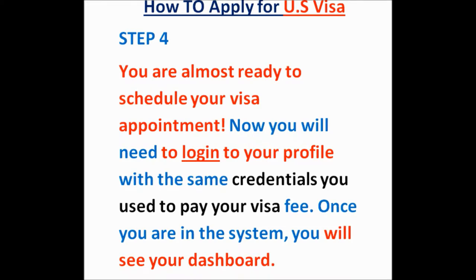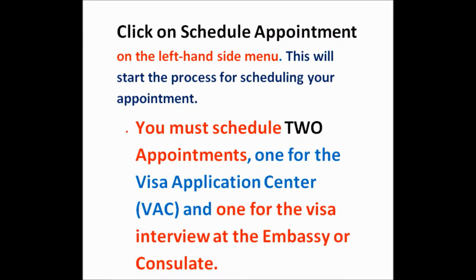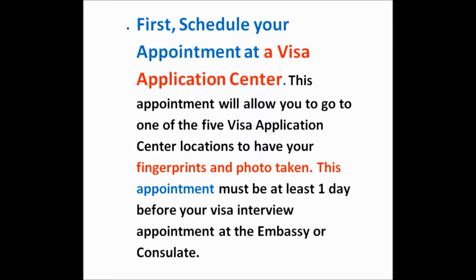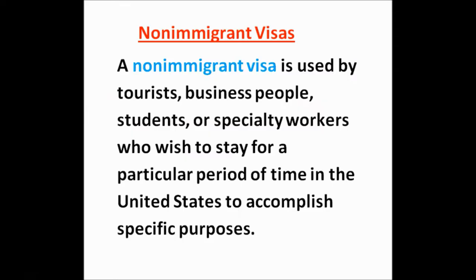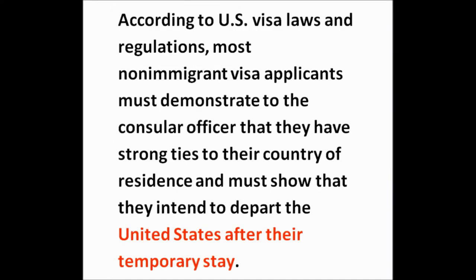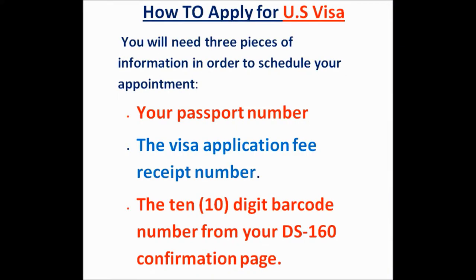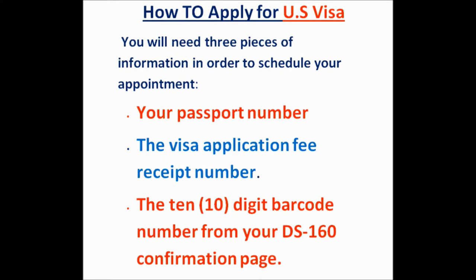In the next step, you must schedule two appointments: one for the Visa Application Center and another for the visa interview at the embassy or consulate. First, schedule your appointment at a Visa Application Center, where you will go to one of the five VAC locations of your choice to have your fingerprints and photo taken. This appointment must be at least one day before your visa interview. Second, schedule your visa interview at the embassy or consulate. To schedule your appointment, you will need your passport number, your visa application fee receipt number, and the 10-digit barcode number from your DS-160 confirmation page.